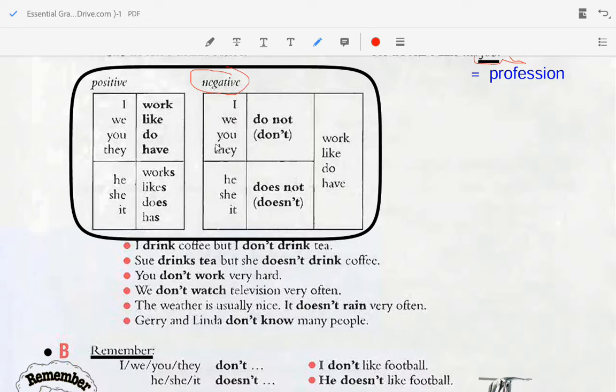We do not like, you don't do, they don't have, he does not work, she does not like, it doesn't do, it doesn't have. I drink coffee but I don't drink tea. She drinks tea but she doesn't drink coffee.